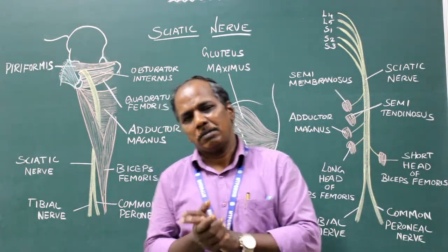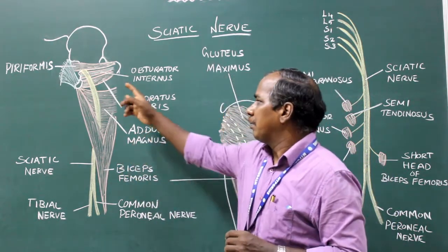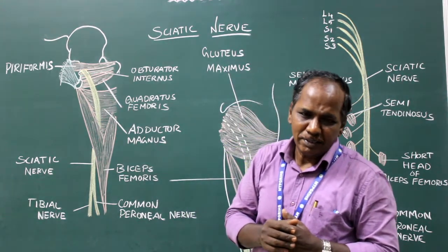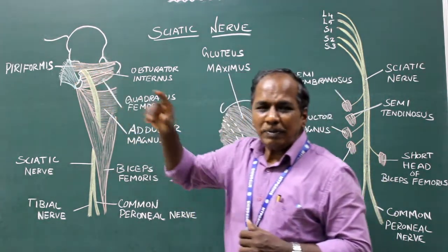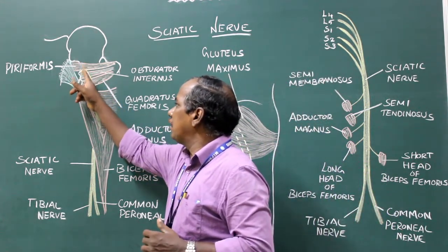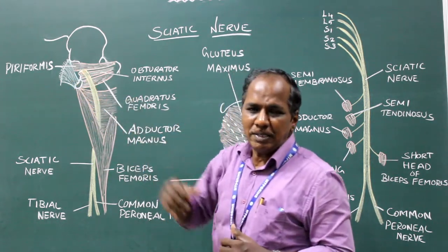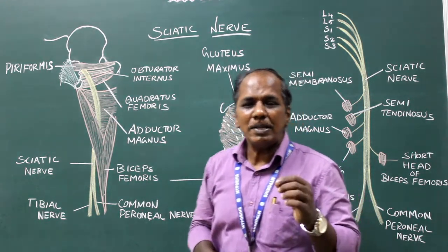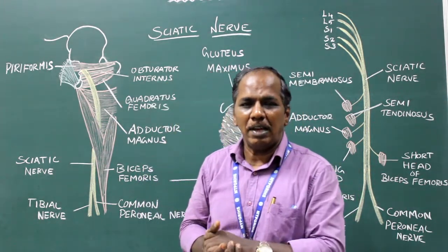Regarding the course, the nerve starts in the pelvis in front of the piriformis. It exits the pelvis by passing through the greater sciatic notch, where it enters the gluteal region and descends in the posterior compartment of the thigh, that is the hamstring compartment of the thigh.